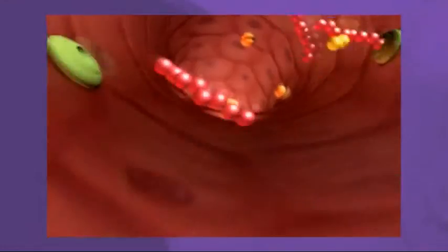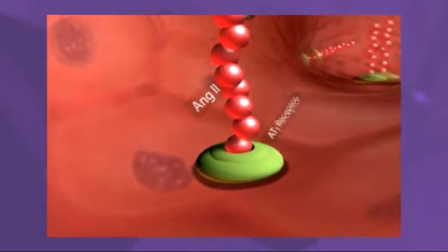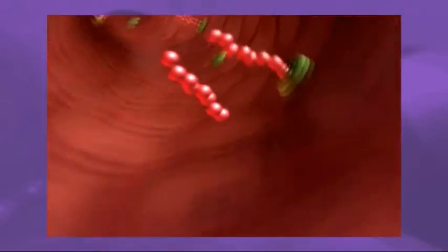Once angiotensin-2 is formed, it binds to AT1 receptors, which in turn cause vasoconstriction, inflammation, and myocardial remodeling.